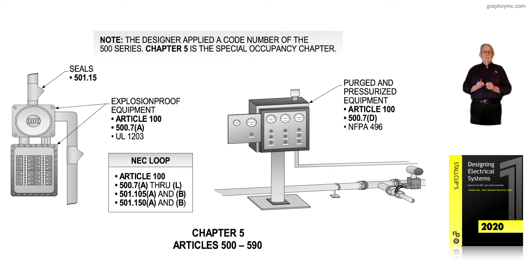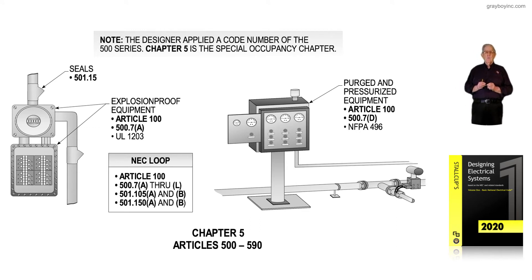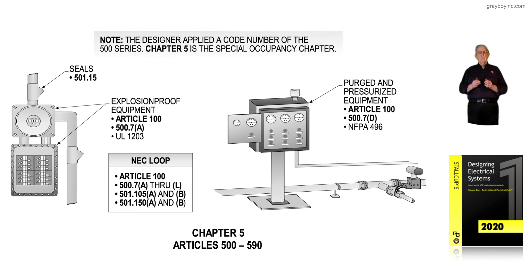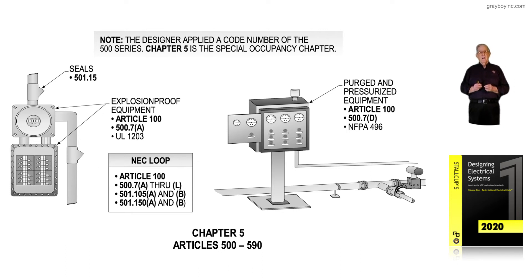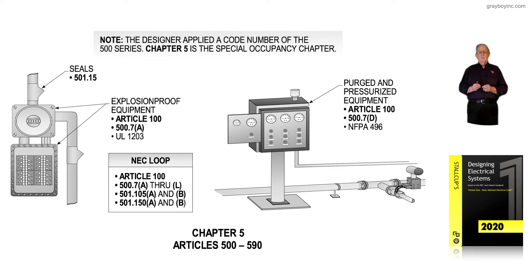If we wanted to take a Hoffman box and install hermetically sealed contacts or use non-incentive circuits, then 501.105A and B would deal with instruments or relays and things like that. And 501.150A would deal with communication circuits, control circuits, and those kinds of items.